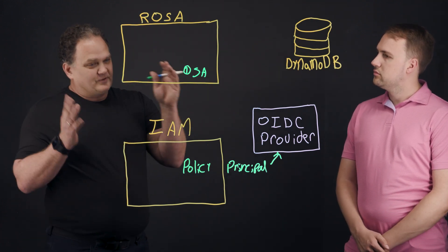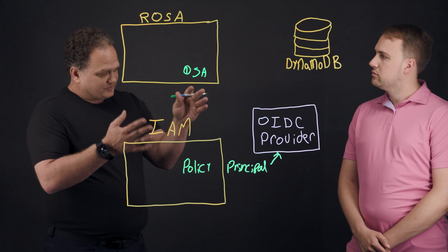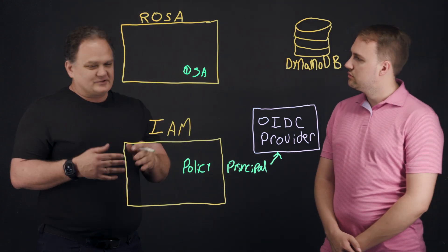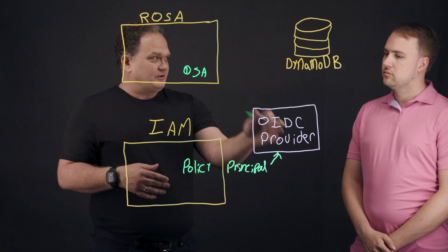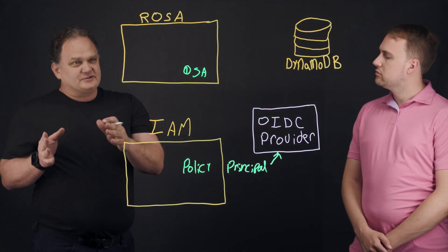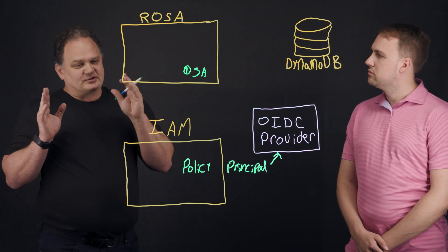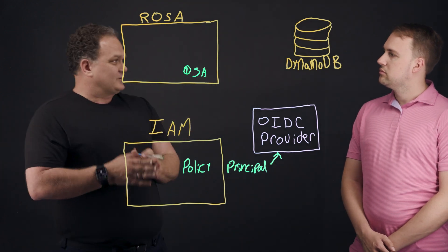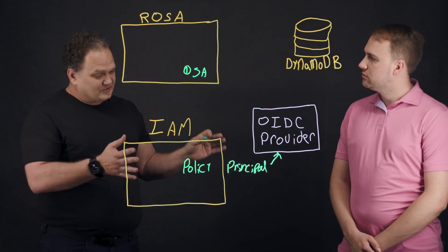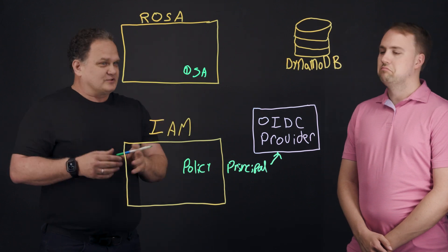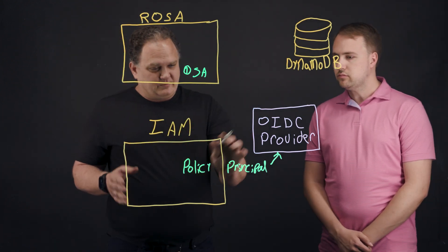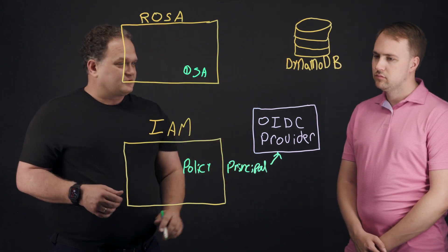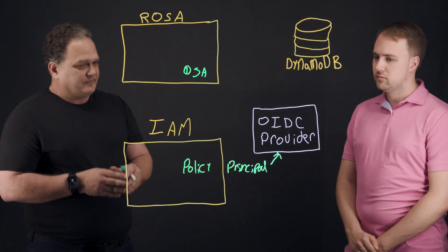So if the registry needs to access S3 to store images, it doesn't need to do things like spin up EC2 instances. So using short-term credentials with the OIDC provider, we're able to give the pods that control the registry permissions to only connect to S3 and not do things it doesn't need to do, like spin up EC2 instances. So we're going to use the same principle here of creating a new policy. And it's going to be the OIDC provider is going to perform the action on our behalf.